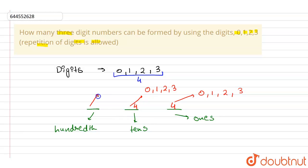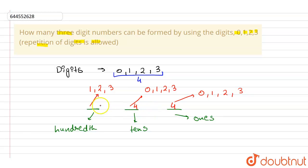But in the hundreds place, this can only accommodate the digits 1, 2 and 3. Because if 0 were placed there, it would not remain a three-digit number — it would become a two-digit number, since that leading place would not be counted. So only 1, 2 and 3 can be filled here, giving 3 ways.